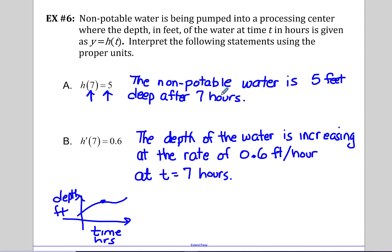So when we get to seven hours, the height is five feet. This is our x-axis independent variable, this is our y-axis. So y equals h(t), or the h of seven hours is five feet. The non-potable water is five feet deep after seven hours. On the next one, this is talking about the derivative or the rate of change. So that rate of change right here is six tenths. That's telling us that the depth of the water is increasing at the rate of six tenths feet per hour when the time is seven hours.